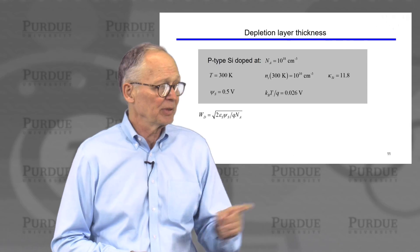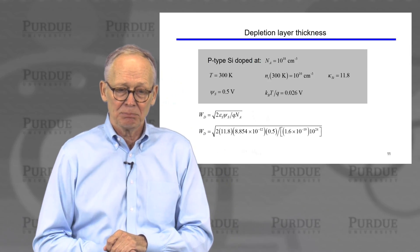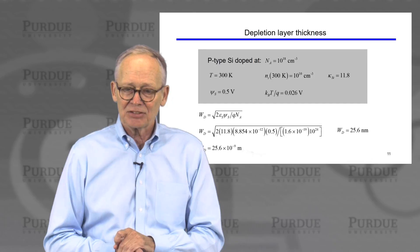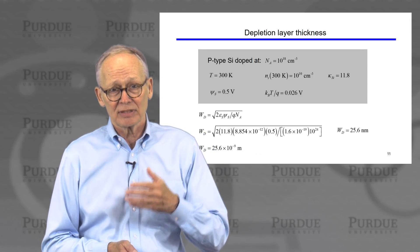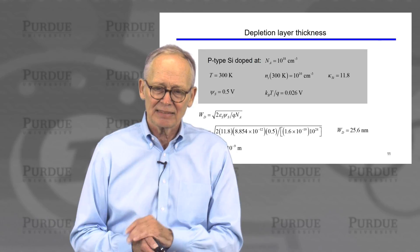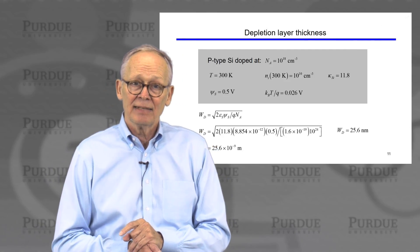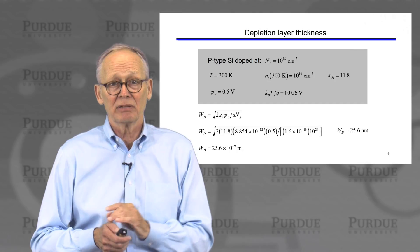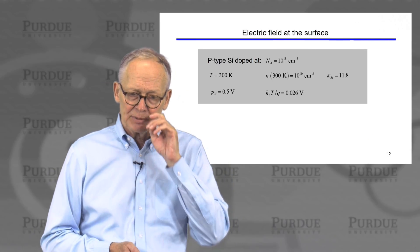Using our depletion approximation expression for W_D and plugging in numbers, we find W_D equals 25.6 × 10^-9 meters, or 25.6 nanometers. That isn't very deep — pushing the mobile holes away from the surface occurs over just a few nanometers. If we were to decrease the doping density by a factor of 100 to 10^16 per cubic centimeter, we would increase the depletion layer depth by a factor of 10, giving 256 nanometers. So the depth depends strongly on how the semiconductor is doped.